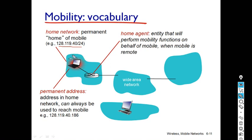Mobility functions are managed by software called the home agent. This user can visit other networks, but this address — the permanent address of the user — is the one that got registered in that particular area.